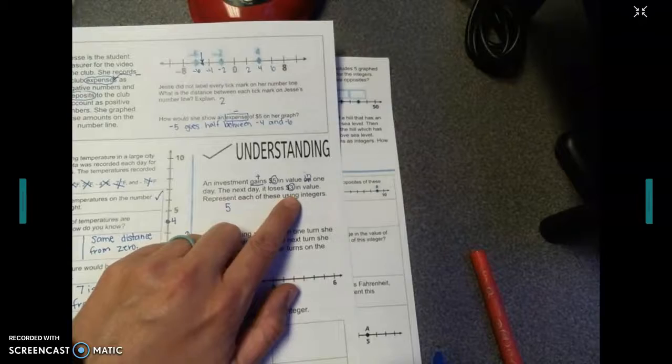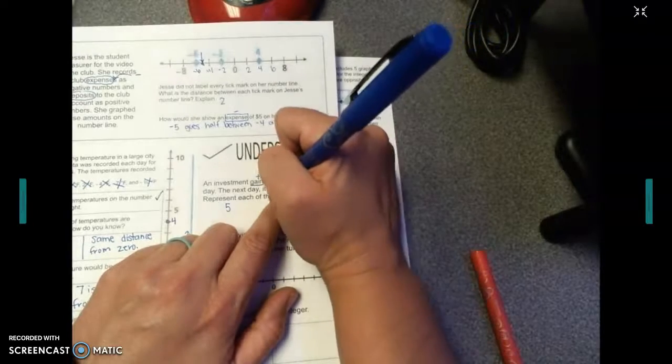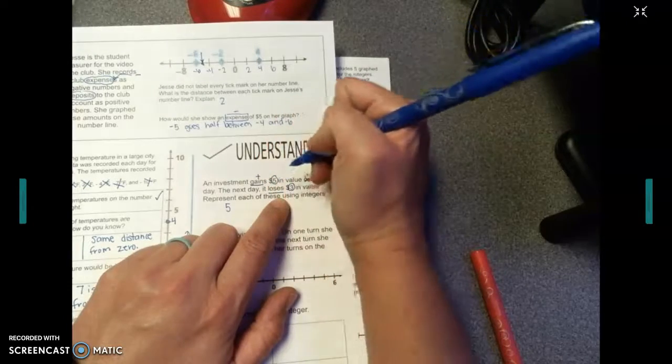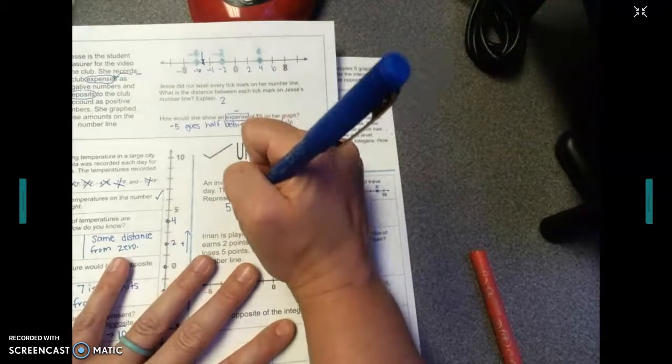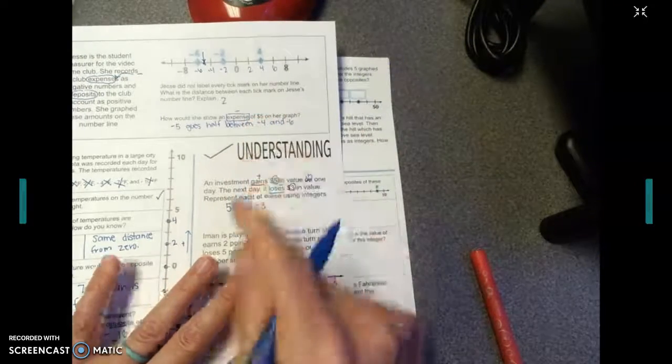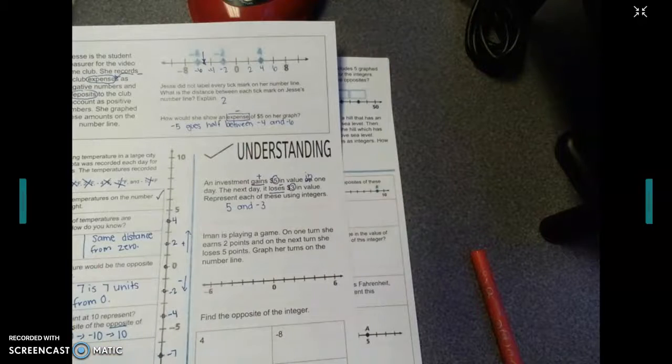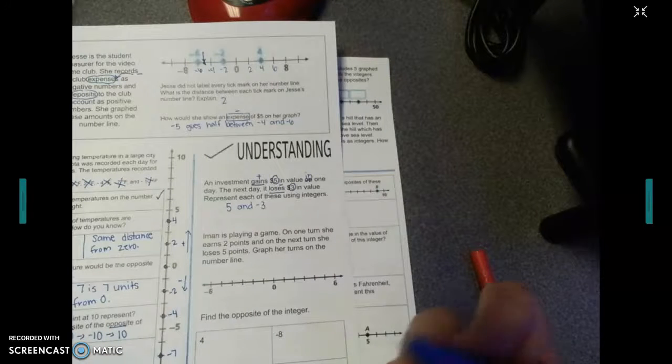But if I look at 3, the word representing that is loss. So it loses $3. Loses is negative. So the integer over here would be negative 3. So our answer for this one is 5 and negative 3. If you put the dollar signs in front of them, that's fine. I'll take that.